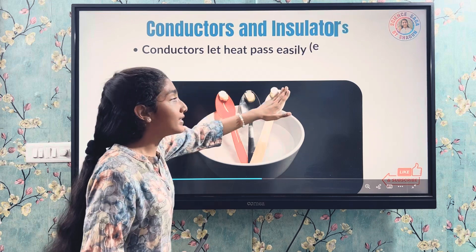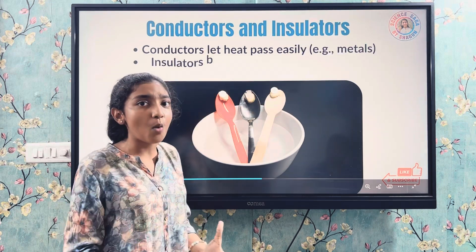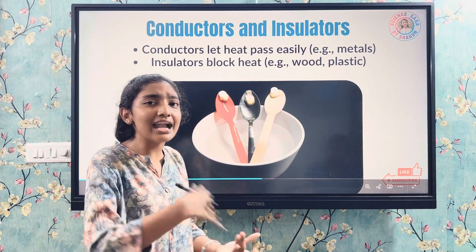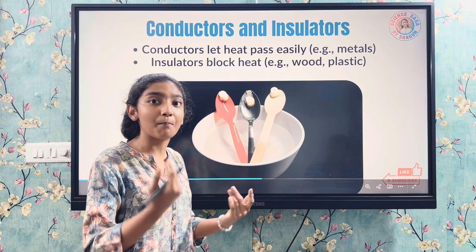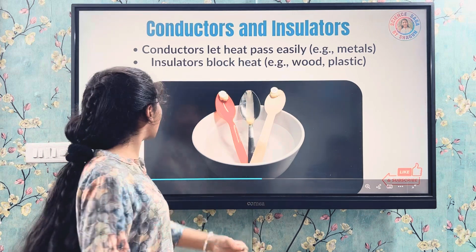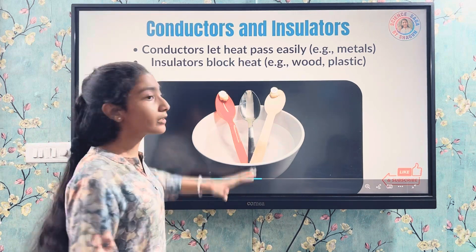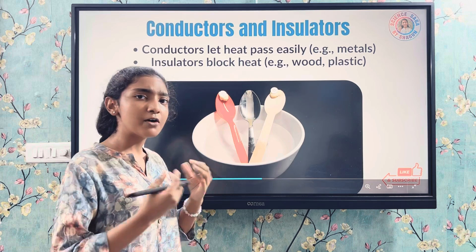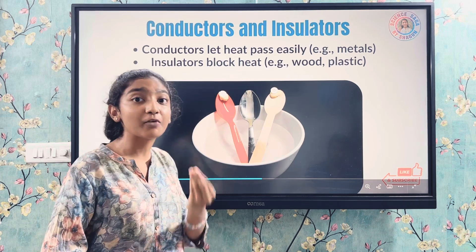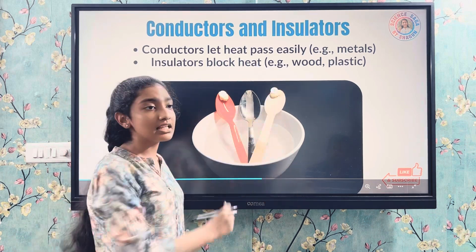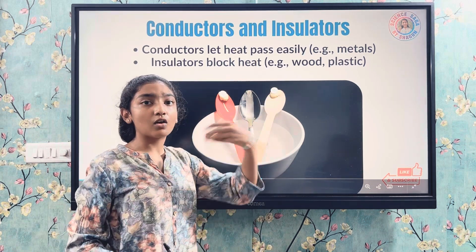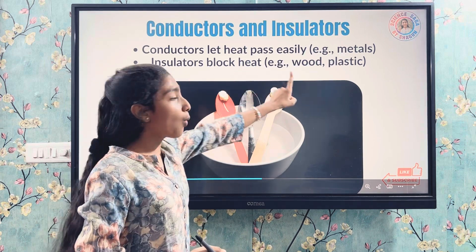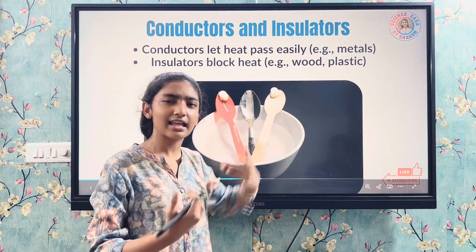Conductors and insulators — conductors let heat pass through, but insulators block the heat and do not let it pass through. Examples of conductors are metals like copper. Insulators include wood, plastic, etc.